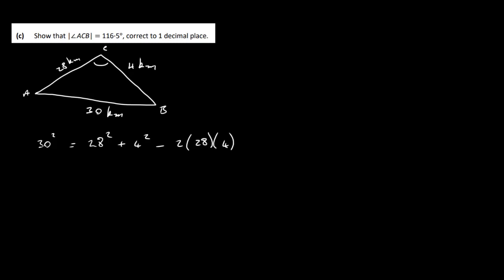For part C, we need to show that angle ABC is 116.5 degrees to one decimal place. We have a triangle with sides 28, 4, and 30 kilometres — a non-right-angled triangle — so we use the cosine rule. Starting with the side opposite the angle: 30² equals 28² plus 4² minus 2 times 28 times 4 times cos C.